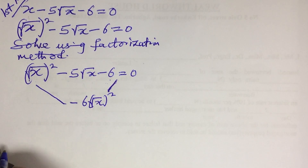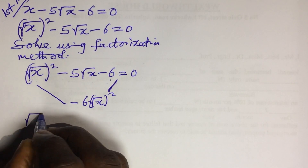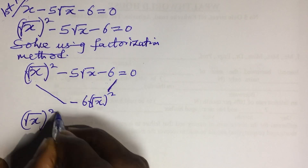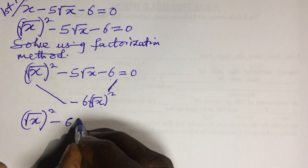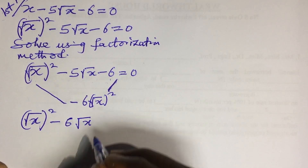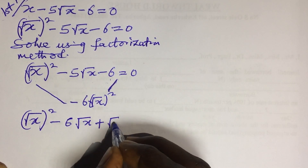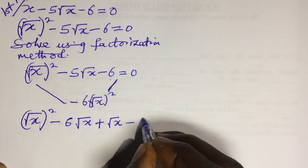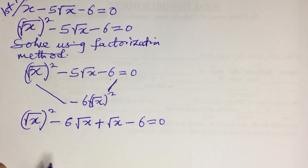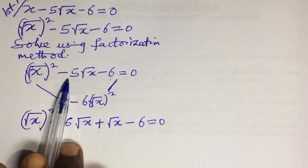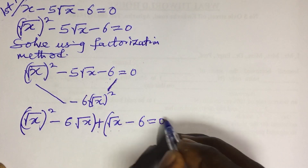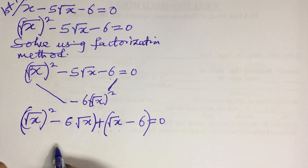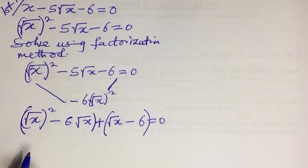Those two numbers will be minus 6 and plus 1. So we split the middle term: (√x)² minus 6√x plus √x minus 6 equals 0. If you check, minus 6√x plus √x gives us minus 5√x, which is correct. Now we group and factor.